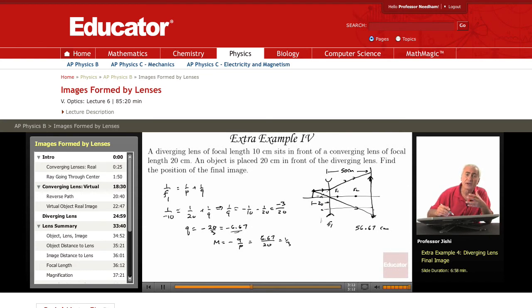So this image that we calculated here acts as a real object for this converging lens. Why? Because rays arrive at the converging lens, they're converging rays, or convergent rays, and they are coming from A prime, B prime. So the image in the first lens acts as a real object. It's a virtual image in the first lens. It acts as a real object for the second lens.